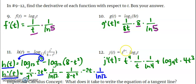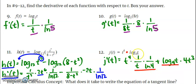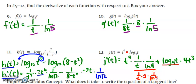Last one uses a product rule: first times the derivative of the second plus the second times the derivative of the first. The derivative of log base b of t is 1 over the argument times the derivative of the argument times 1 over the natural log of the base.